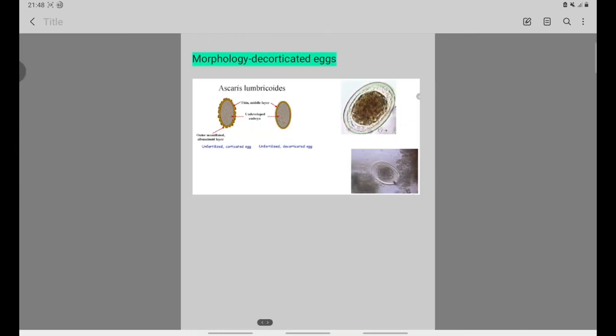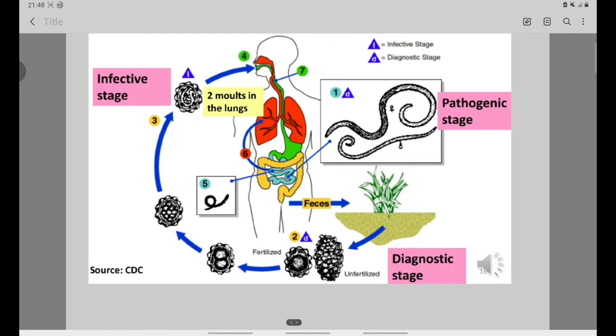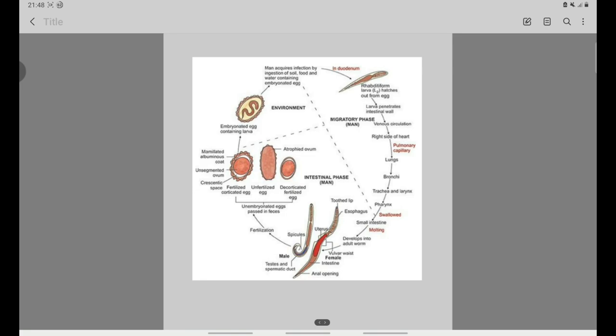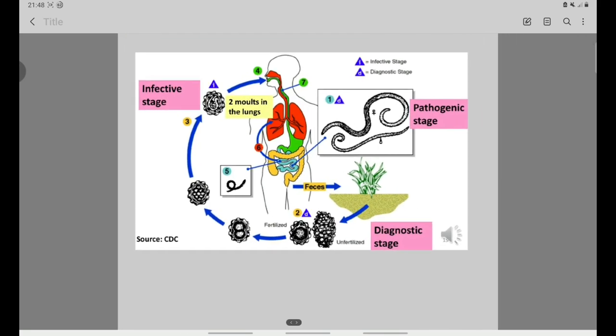Decorticated eggs lack the external outer mammilated albuminous layer. The life cycle stages: feces containing eggs move to soil in the environmental stage. Unfertilized eggs and decorticated eggs may be present. In soil with moisture, air, and appropriate temperature, eggs mature.